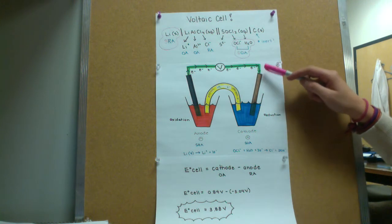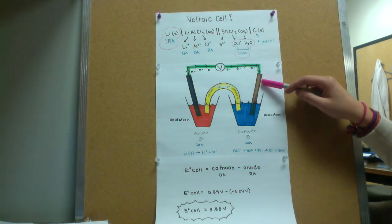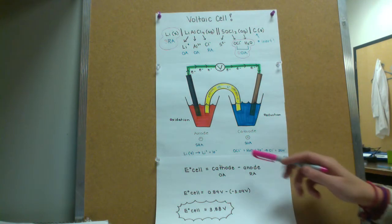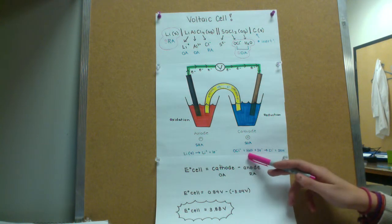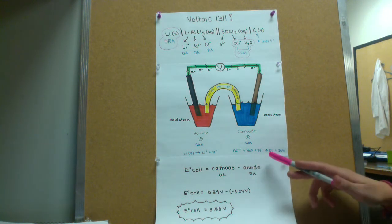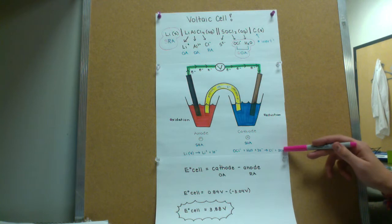Over on the other side, we have the cathode, which will be gaining the electrons from the external circuit. This reaction is the hypochlorite reacting with water and gaining two electrons to become the chloride ions and the hydroxide ions.